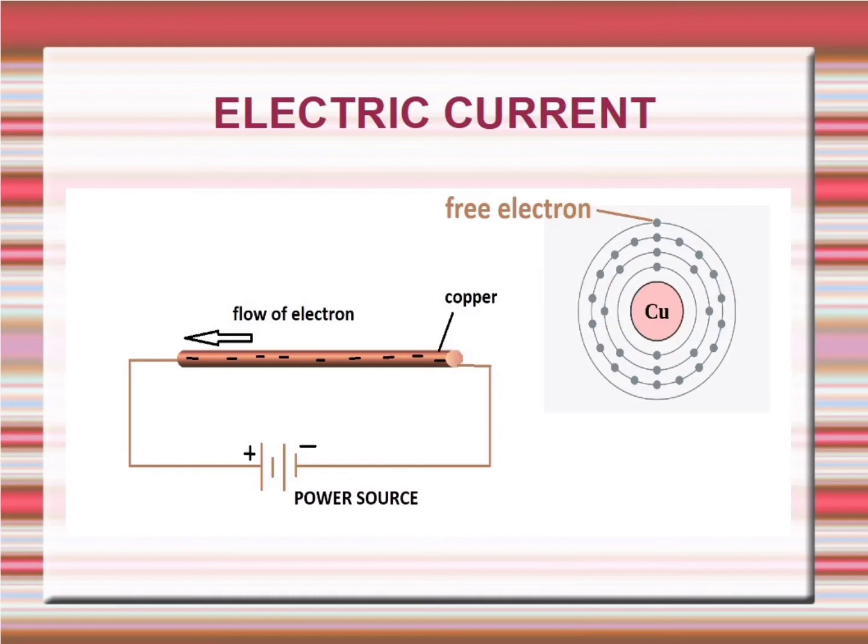In the last orbit of the copper atom, there is just one electron. It is this electron which is going to participate in the conduction process. So every copper atom has one electron in the outermost orbit which can participate in the conduction of electric current.